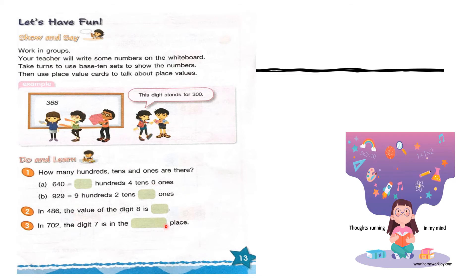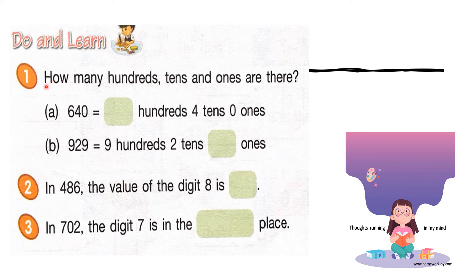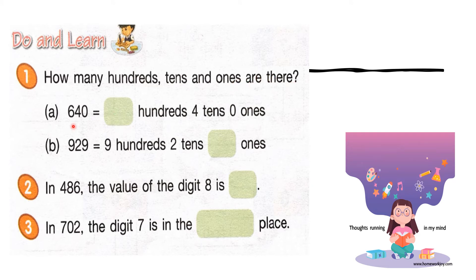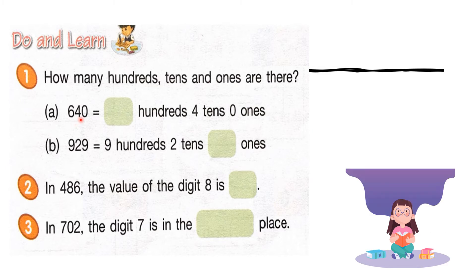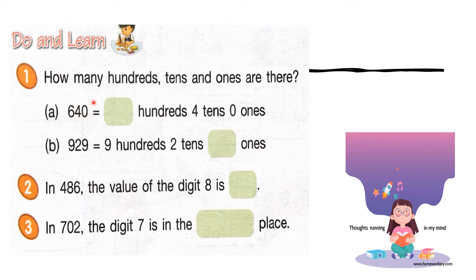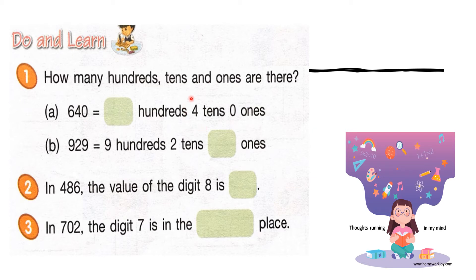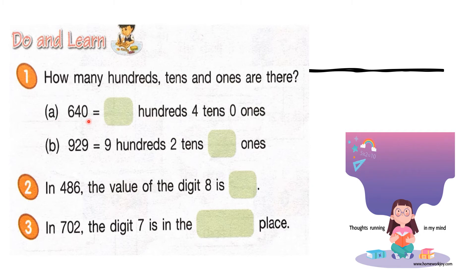We will do an example. How many hundreds, tens, and ones are there? Look at the number. Letter A: 640. In 1s there are 0. In 10s the digit is 4. In hundreds, what is the digit? Your answer is 6. Very good.